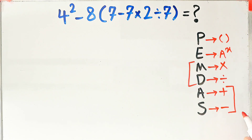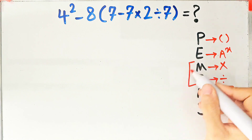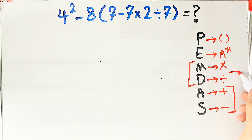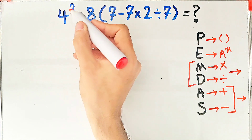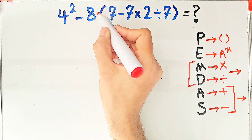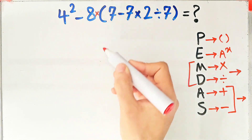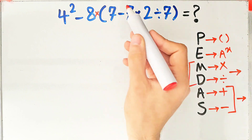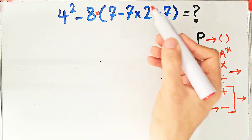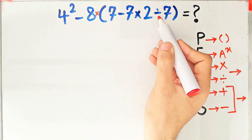When we have both in an expression we start from the left and simplify. In this question we have exponent, subtraction, multiplication, parenthesis, another subtraction, another multiplication, and division.